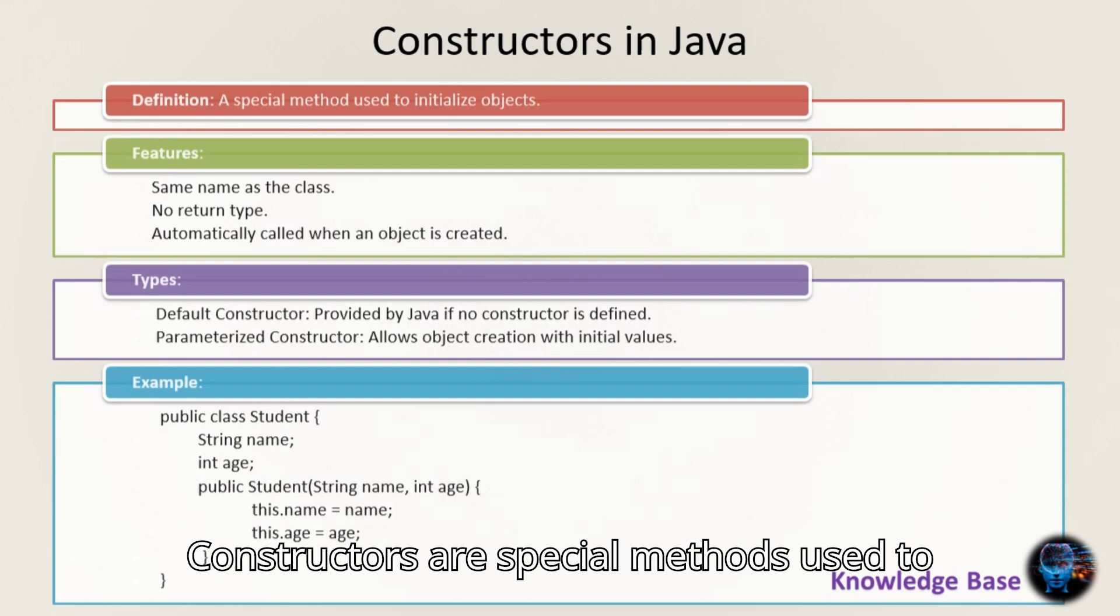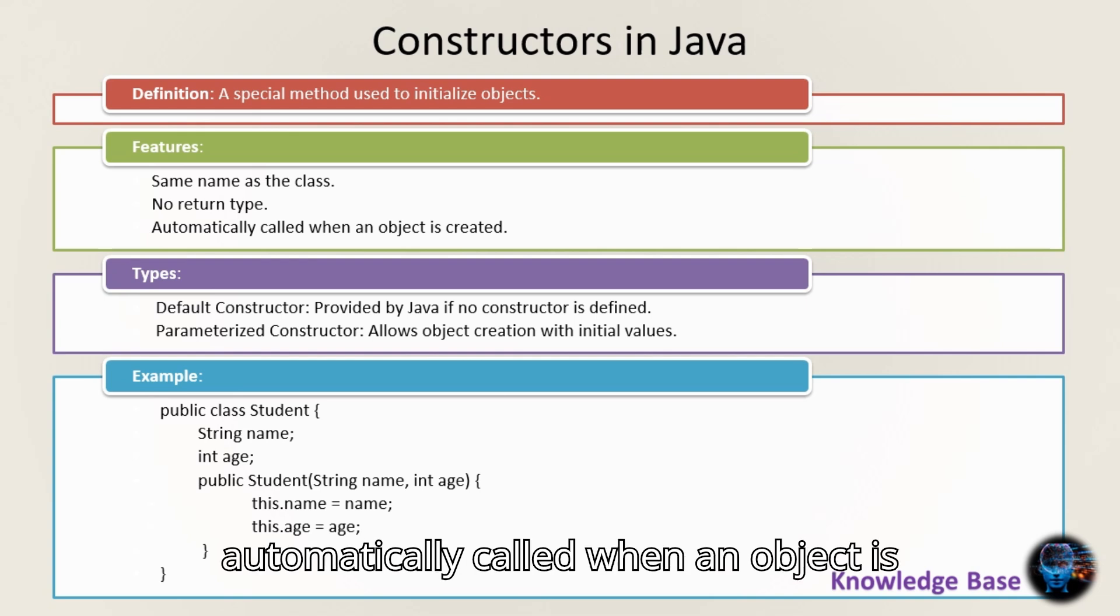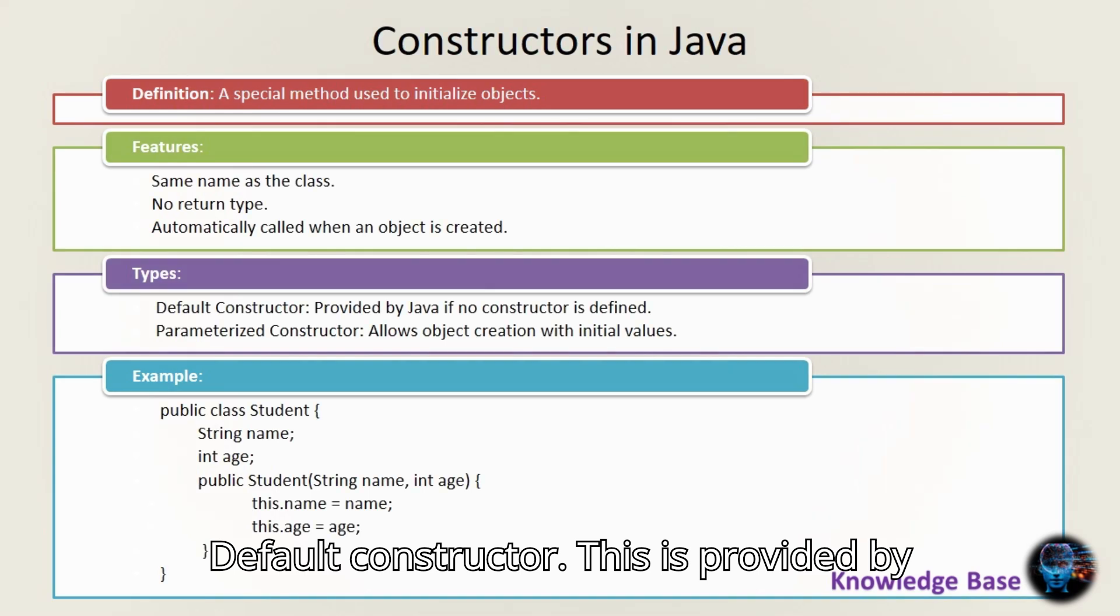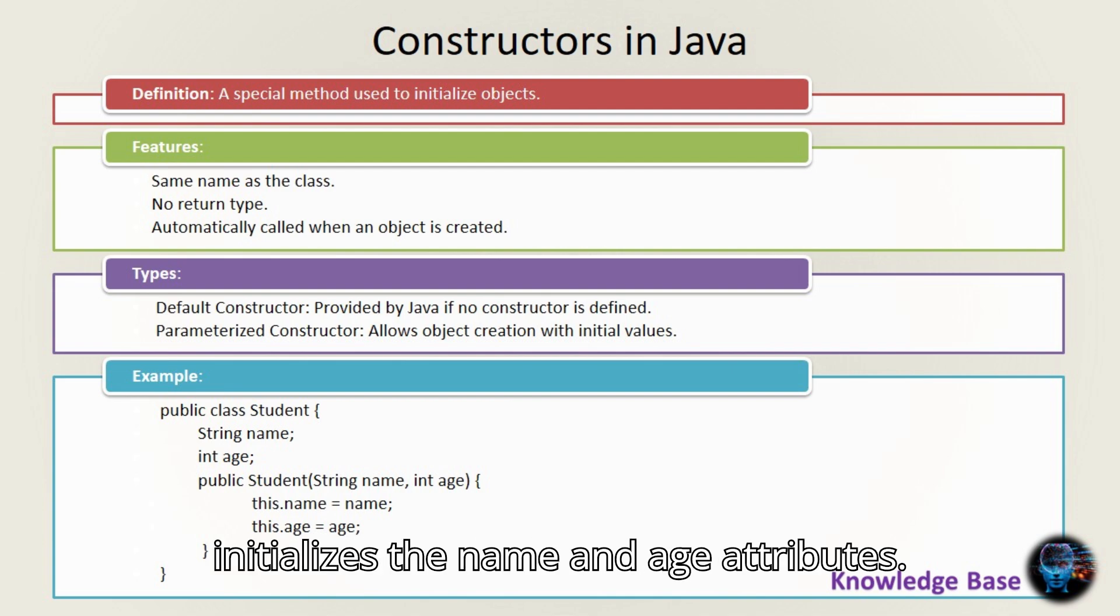Constructors are special methods used to initialize objects. They have the same name as the class and do not have a return type. Constructors are automatically called when an object is created. There are two types of constructors: One, default constructor, which is provided by Java if no constructor is defined. Two, parameterized constructor, which allows you to create objects with specific initial values. Here, the Student class has a parameterized constructor that initializes the name and age attributes.